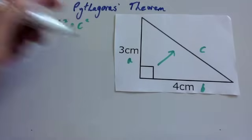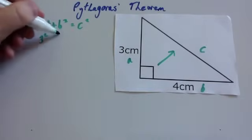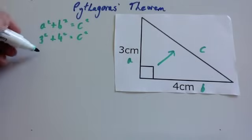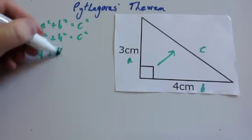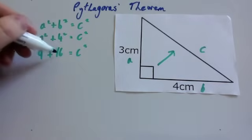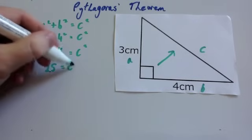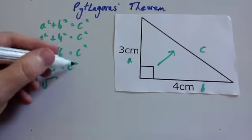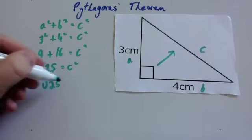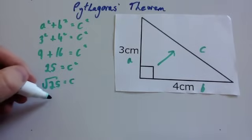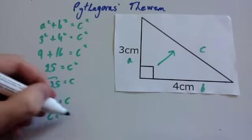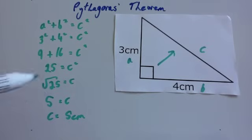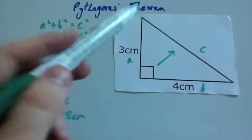So a squared — well, a is three, so it's three squared. b is four, so that's going to be four squared. And we're going to add them together, and that will give us c squared. Three squared, three times three, is nine. Four times four is sixteen. We add them together, and that gives us c squared. Nine plus sixteen is twenty-five, and that's c squared. So when you square this longest line c, you get twenty-five. We now need to square root the twenty-five, because the opposite of squaring is square root. So the square root of twenty-five is five. So c equals five centimetres.